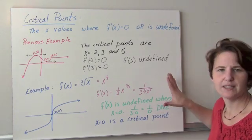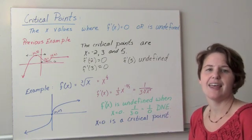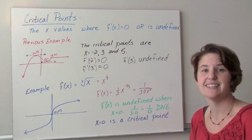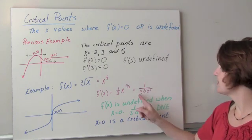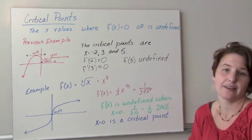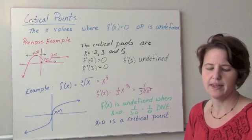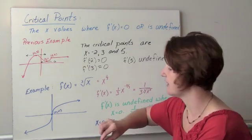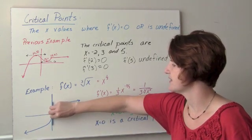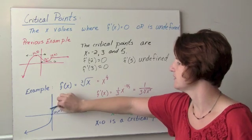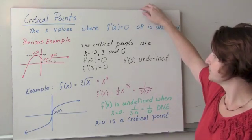So f prime of x never equals 0, and I do not get a critical point there. But we have a fraction, and that means we could get a denominator equal to 0, which means we'd have an undefined slope. The denominator equals 0 when x equals 0, so we would say that x equals 0 is a critical point. If we use our tangent line, we have positive slopes coming in. The derivative — the tangent line — is actually vertical at that point, and remember, vertical lines have an undefined slope.